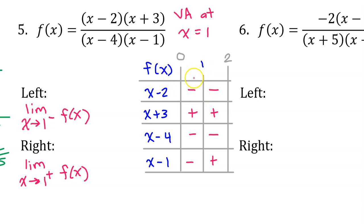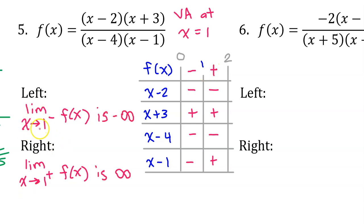What about the overall sign of f of x as x approaches 1 from the left? I have an odd number of negatives, so f of x will be negative. An even number of negatives means f of x will be positive. That means we have negative infinity on the left and positive infinity on the right.